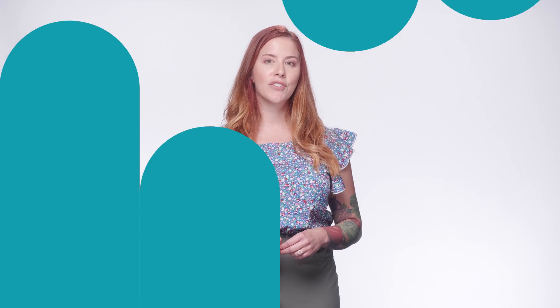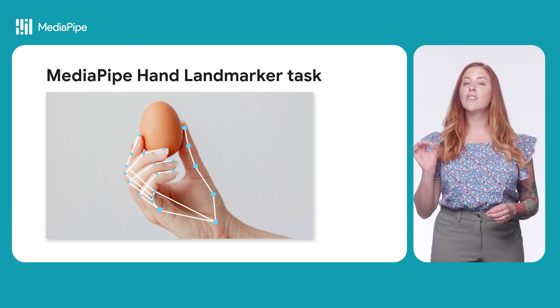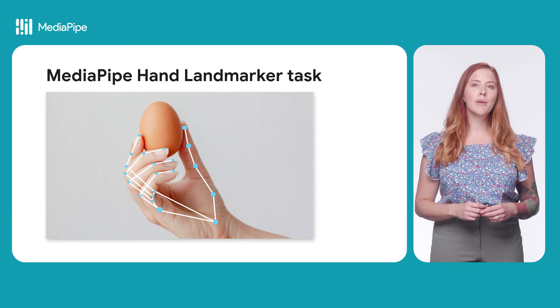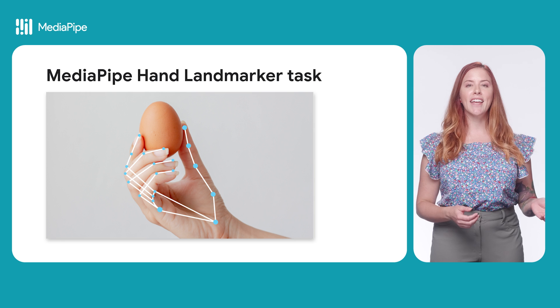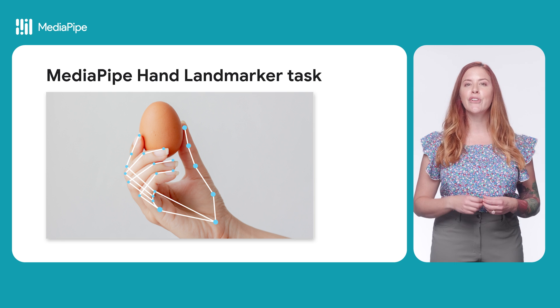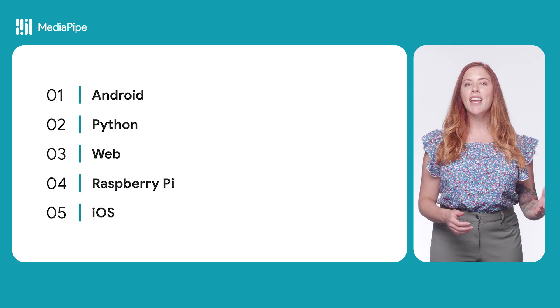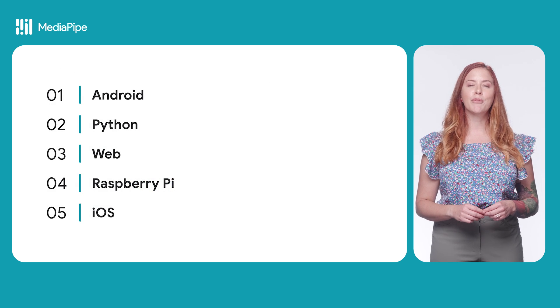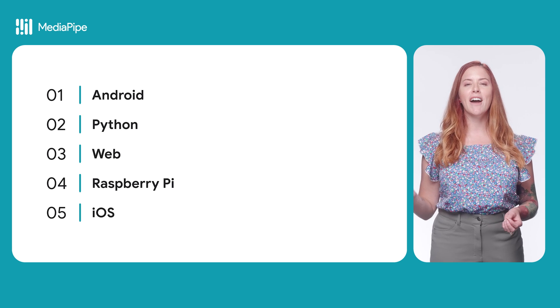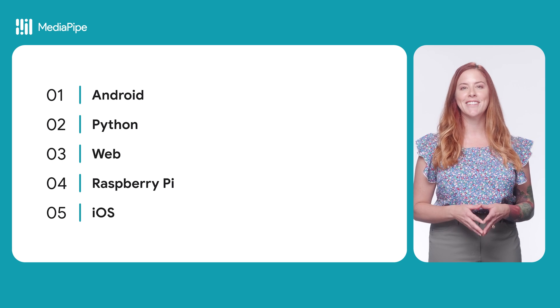The MediaPipe Hand Landmarker task lets you detect the landmarks of the hands in an image. You can use this task to localize key points of the hands and render visual effects over the hands. There are APIs available for Android, Python, the web, Raspberry Pi, and iOS.